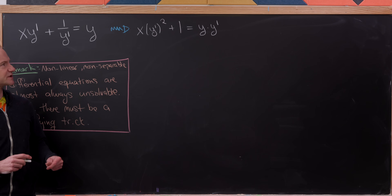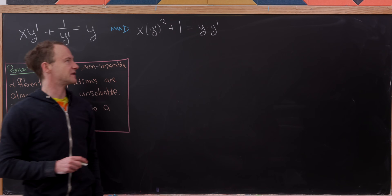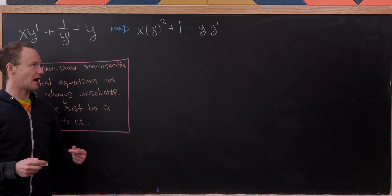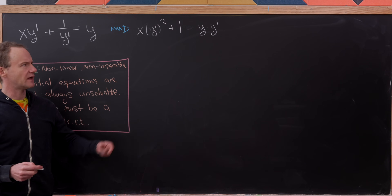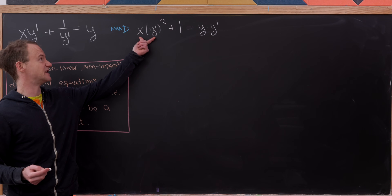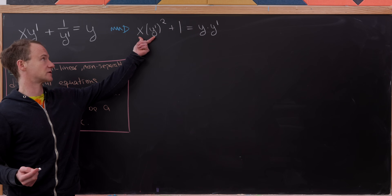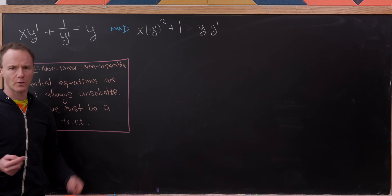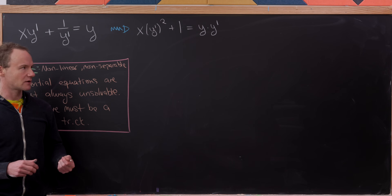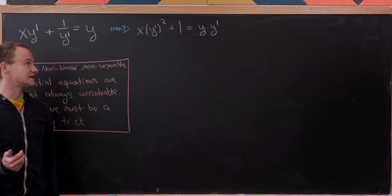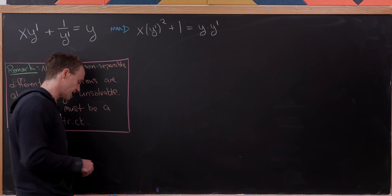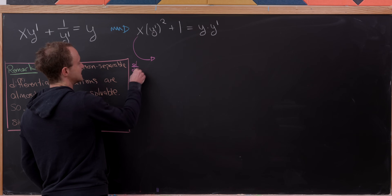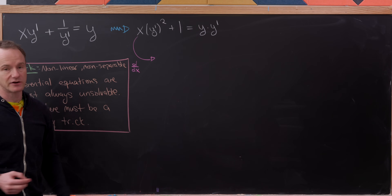Now I'd like to observe that if I take the derivative of this y times y prime, I'll have to use the product rule, and as I do that I'll pick up a y prime squared. And if I take the derivative of the first term x times y prime squared, I'll also have to use the product rule and I'll get a y prime squared. That'll give me a y prime squared on both sides of the equation, which will hopefully reduce the dependence on y prime squared, thus simplifying the situation. This motivates taking the derivative of this entire equation with respect to x.